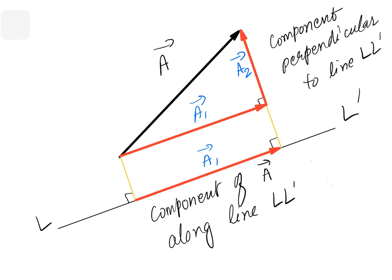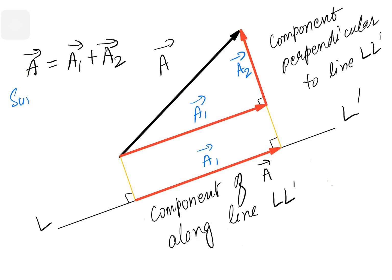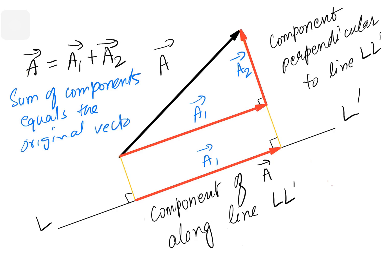Now notice that if I start moving along the A1 vector, A1 vector ends here, and then from here I start moving along A2 vector. The sum of these two vectors — A1 vector and A2 vector — gives me the original vector A. So we can say that vector A is equal to A1 vector plus A2 vector, or the sum of components is equal to the original vector.